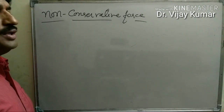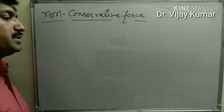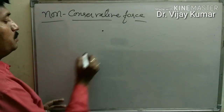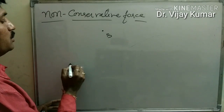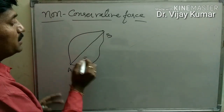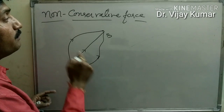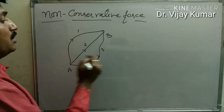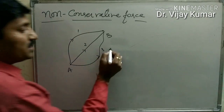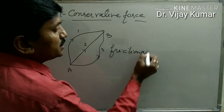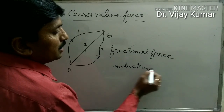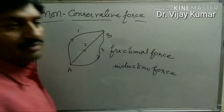A force is said to be non-conservative if the work done in moving a body depends on the path between the two positions. Suppose this is position one and this is position two — the work done depends upon which path is taken. If work done depends upon these paths and not upon the final and initial position, then this force is a non-conservative force. Frictional force and induction force are examples of non-conservative forces. Thank you.